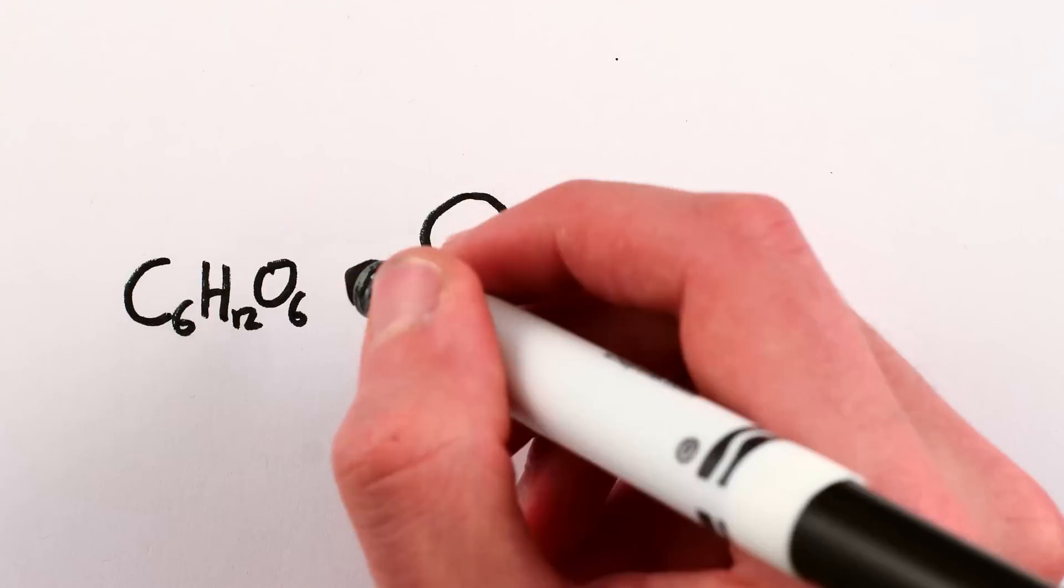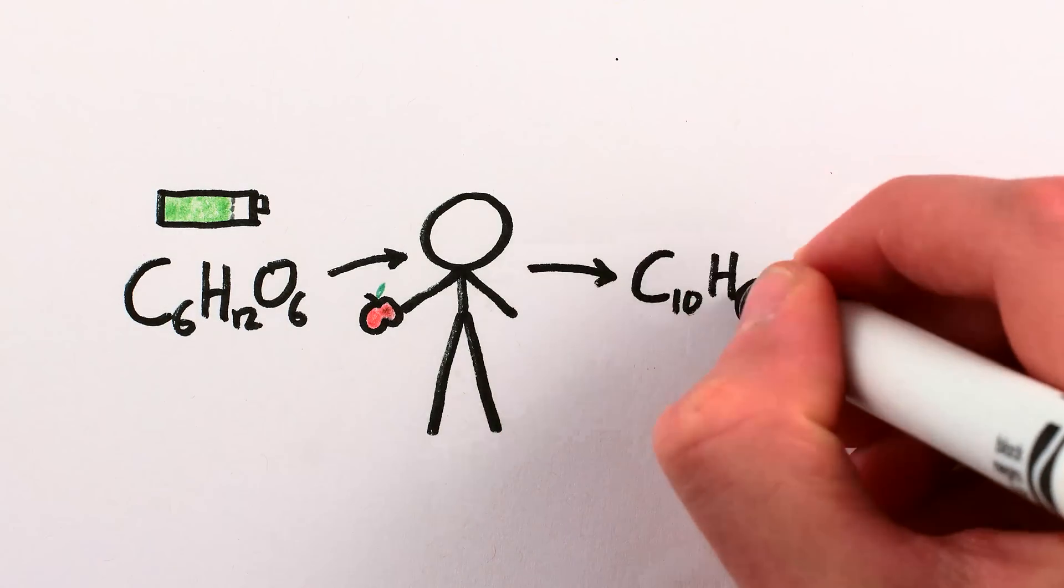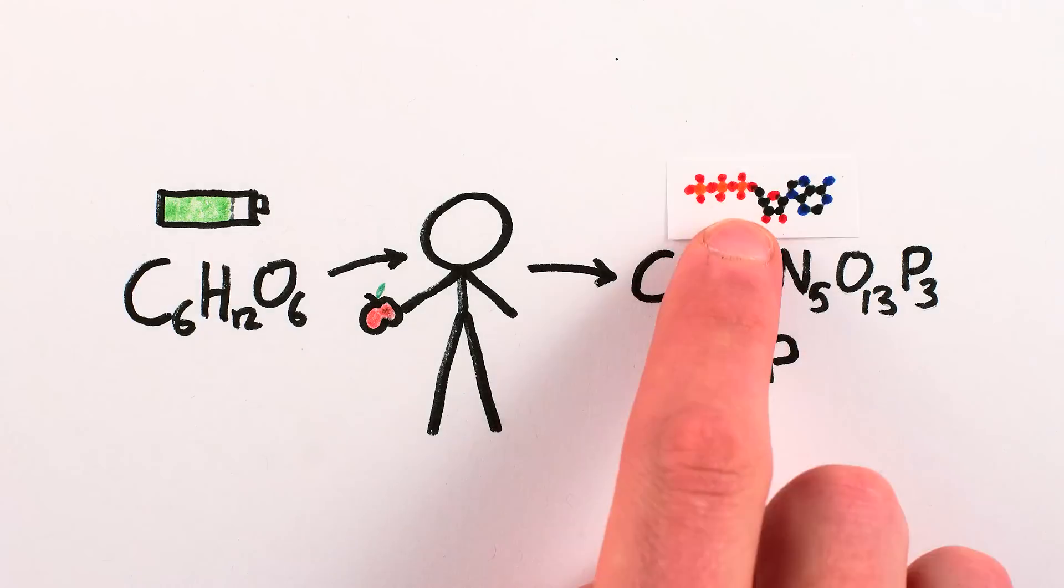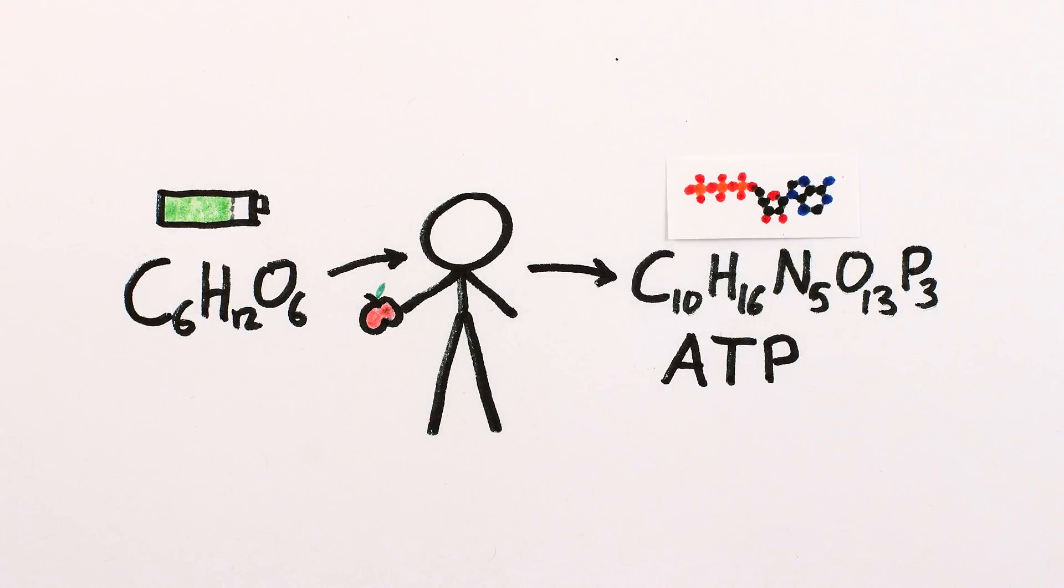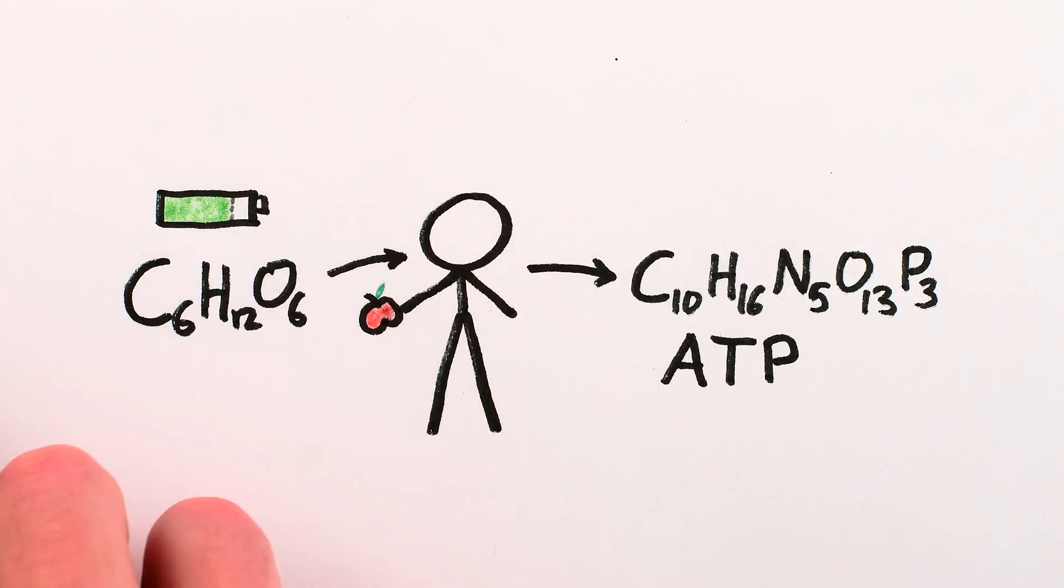An animal, like us, eats the sugar and uses its energy to create molecules of ATP, adenosine triphosphate. ATP is like a little power pack of energy that can be sent to a part of the body where it might be helpful. But ATP doesn't have quite as much useful energy as the sugar that went into making it.